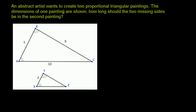An abstract artist wants to create two proportional triangular paintings. The dimensions of one painting are shown — that's this top one right over here. How long should the two missing sides be in the second painting?